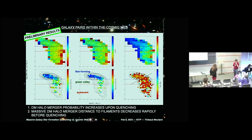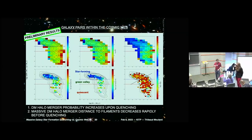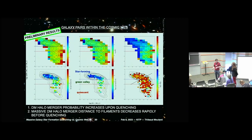Question: Could the result simply reflect the density background rather than proximity to a filament? Answer: That is a good question. The normalized distance already corrects for part of the average density, so we are less dependent on that. The pair-fraction plot is a ratio, and when dividing by the distance of any galaxy of the same color and mass, we are not too dependent on density — we are really looking at the distance to filaments. The local density here basically traces the halo mass of the galaxies.